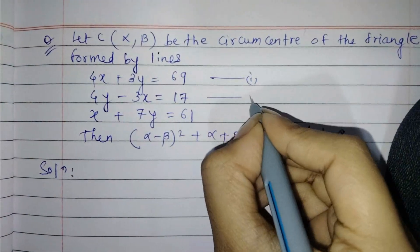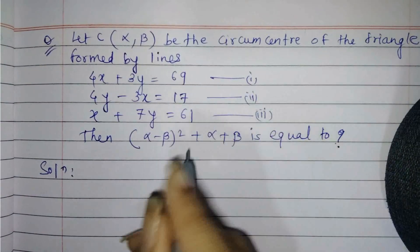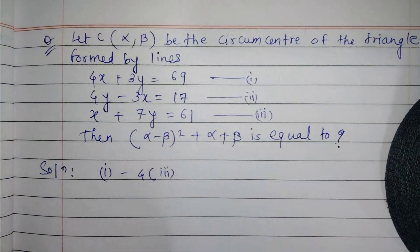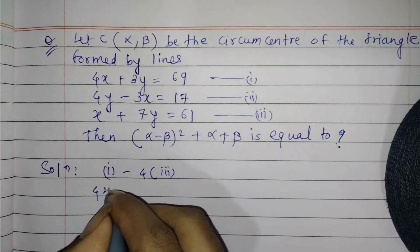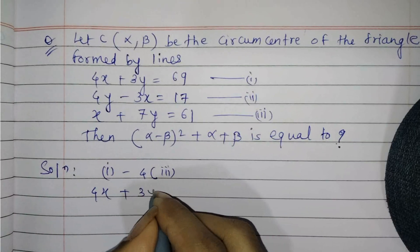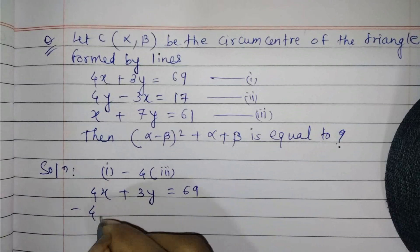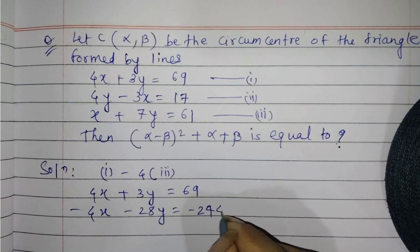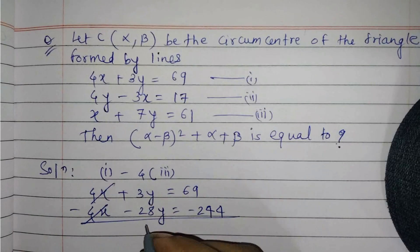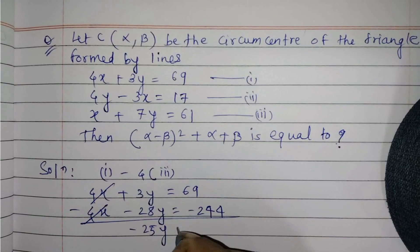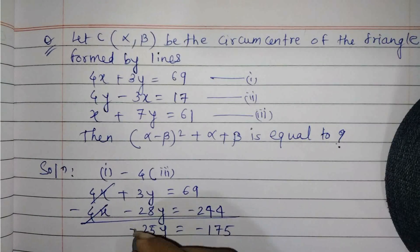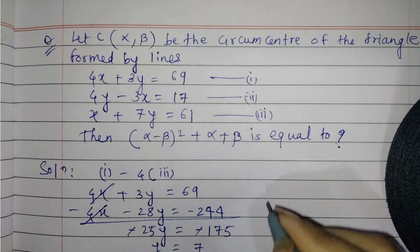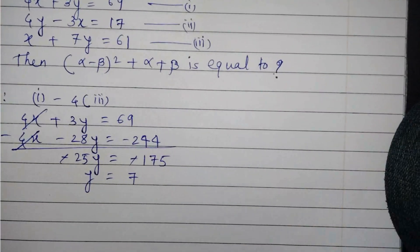Let us assume the three lines as equations 1, 2, and 3. First we will do equation 1 minus 4 times equation 3. So 4x plus 3y equals 69, minus 4x minus 28y equals minus 244. The 4x terms get cancelled, giving minus 25y equals minus 175.